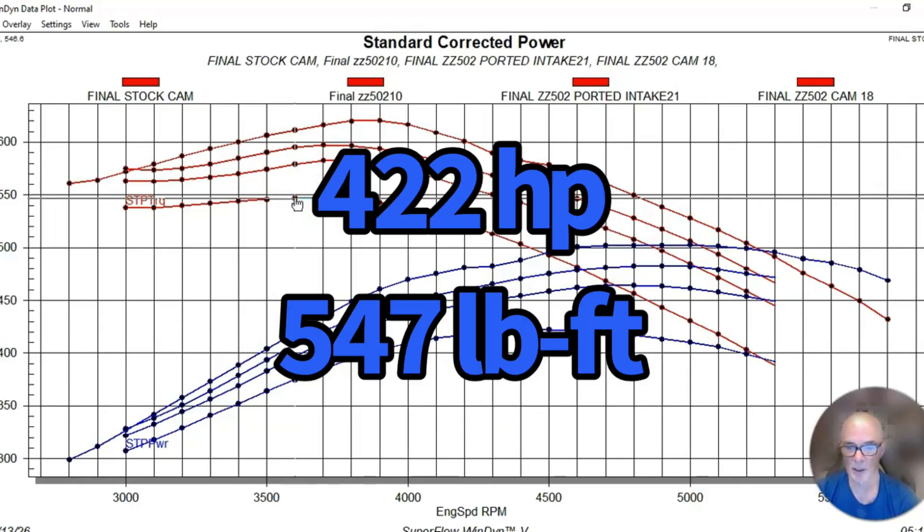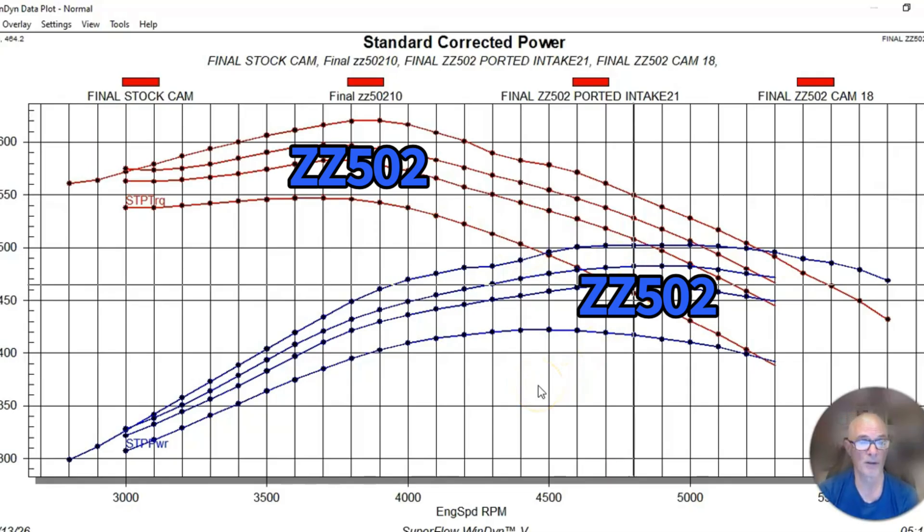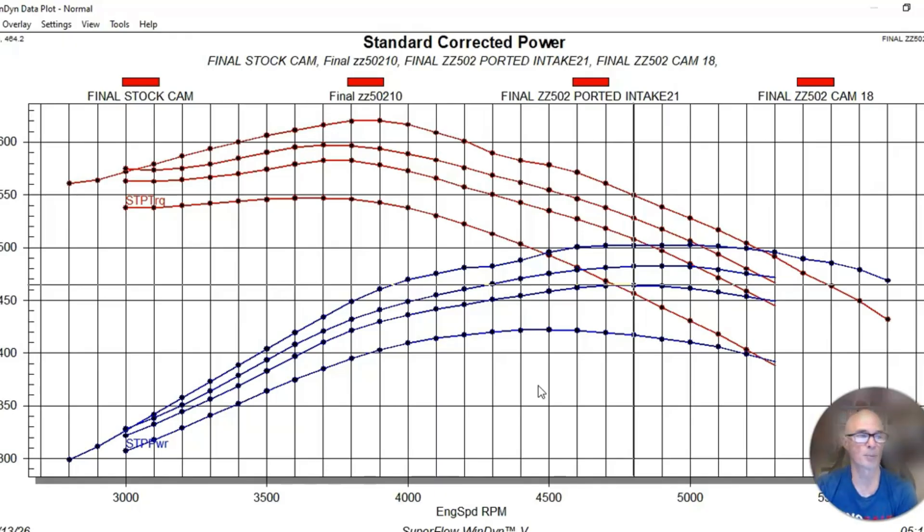Running in this manner on the engine dyno, it made 422 horsepower and 500, 247 foot pounds of torque. You can see that this is the lowest numbers, the lowest part of this graph. Then we put the ZZ502 camshaft in it. The big block Chevy cams require you to change the firing order, but that's very easy on the Holley.